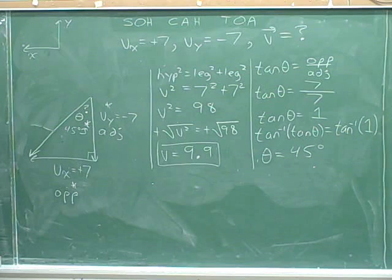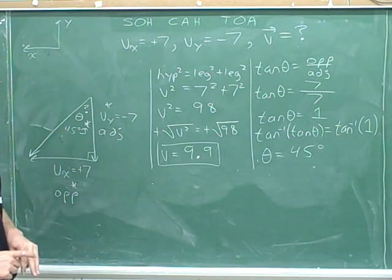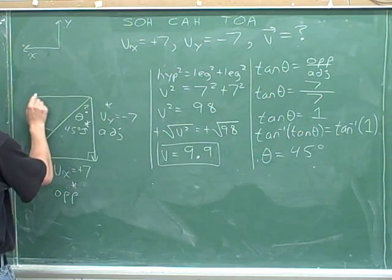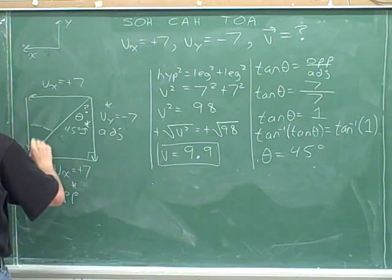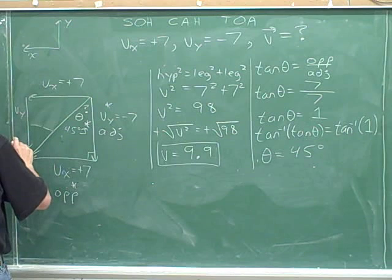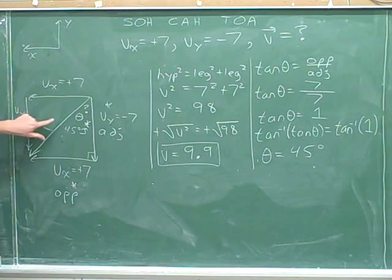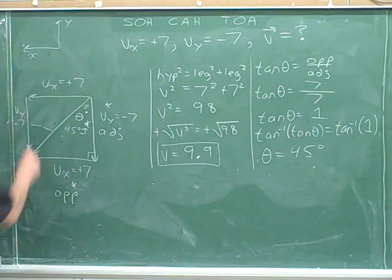Remember that when I drew this triangle, I chose to draw the y component first and then the x component. But if I had wanted to, I could have drawn the x component first. And then I could have drawn the y component. That would have given me, again, the same overall vector as before. The same overall vector as before, but a different right triangle.